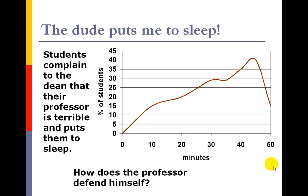So as this graph goes up, that's bad because more students are falling asleep. As this graph goes down, less students are falling asleep and some are actually waking back up. So what we want to know is how does the professor defend himself? And the professor's going to try and come up with some way to say, hey, it's not so bad. And we can actually do that with math.